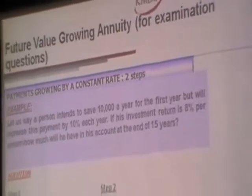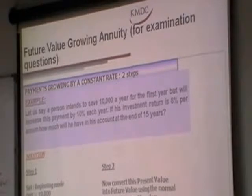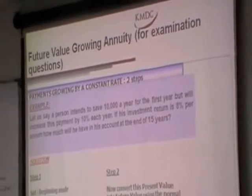Before attempting any of this question, please make a point to plot a time horizon. You intend to save $10,000 a year, but increase the payment by 10% each year. How many years? 15 years.